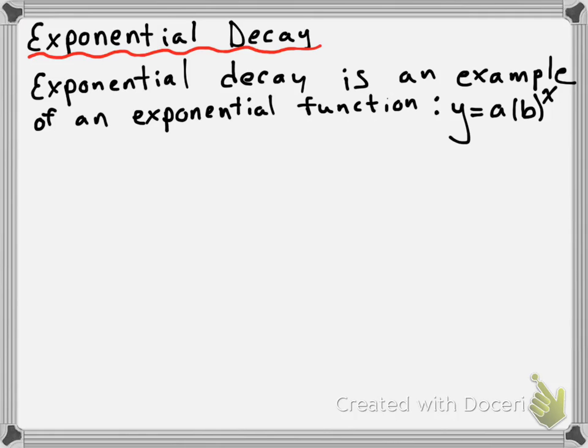But in exponential growth, we said that the b value had to be bigger than 1. Well, in exponential decay, it's not going to be quite like that. The b value is going to have to be between 0 and 1. So it's going to be y = a times b to the power of x, where 0 is less than b is less than 1. You're going to be continuously multiplying by some number less than 1, which is why the value keeps getting smaller and smaller.